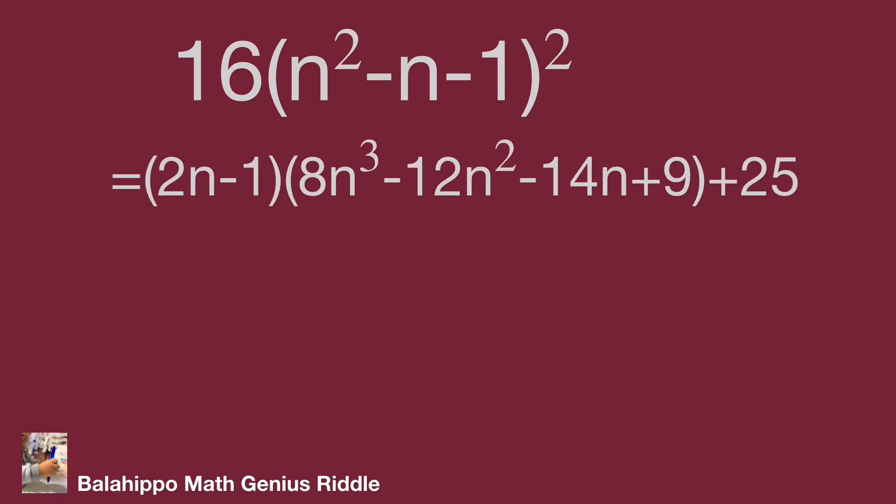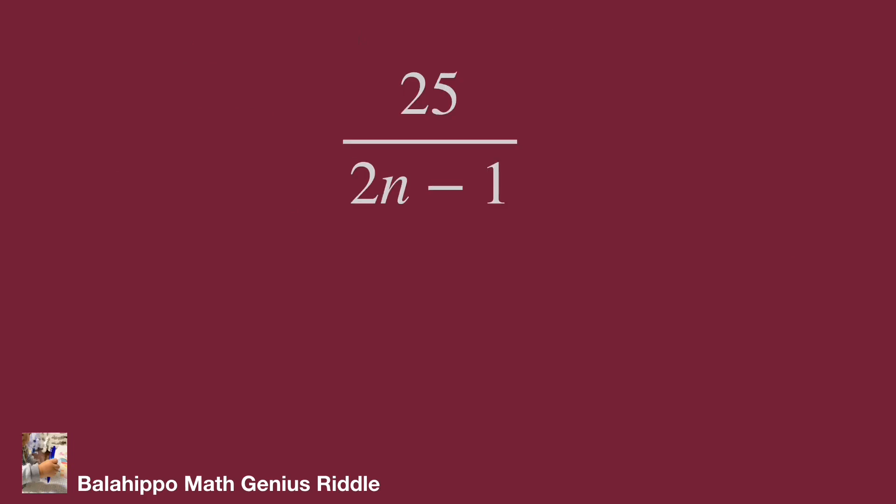So 25 should be divided by 2n minus 1 with no remainder. So 25 over 2n minus 1, the result is integer.